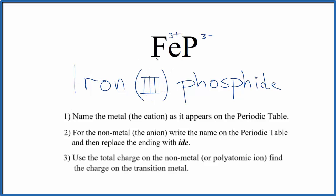So that makes the name for FeP, iron three phosphide. If you were given this name and asked to write the formula, you'd know that the iron would be three plus, so you'd only need one phosphorus ion.